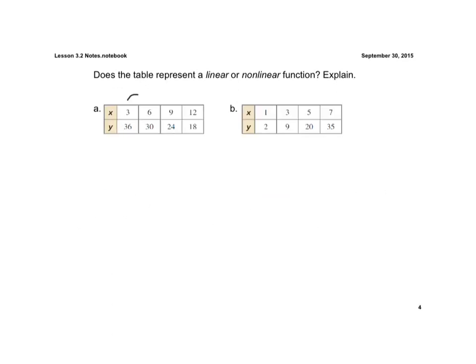Here, if we look at the x's, it increases by 3, increases by 3, and increases by 3. The y is decreasing by 6, decreases by 6, and decreases by 6. So as the x values were increasing by 3, the y values are decreasing by 6. This would be a constant rate of change, which would make this linear.